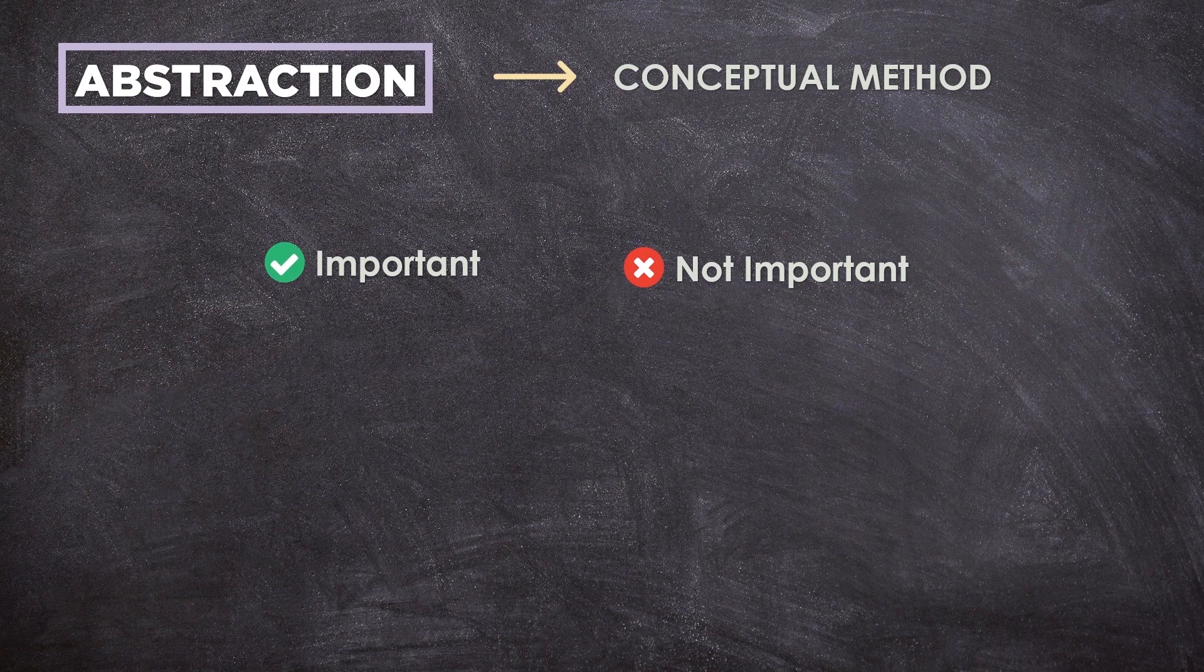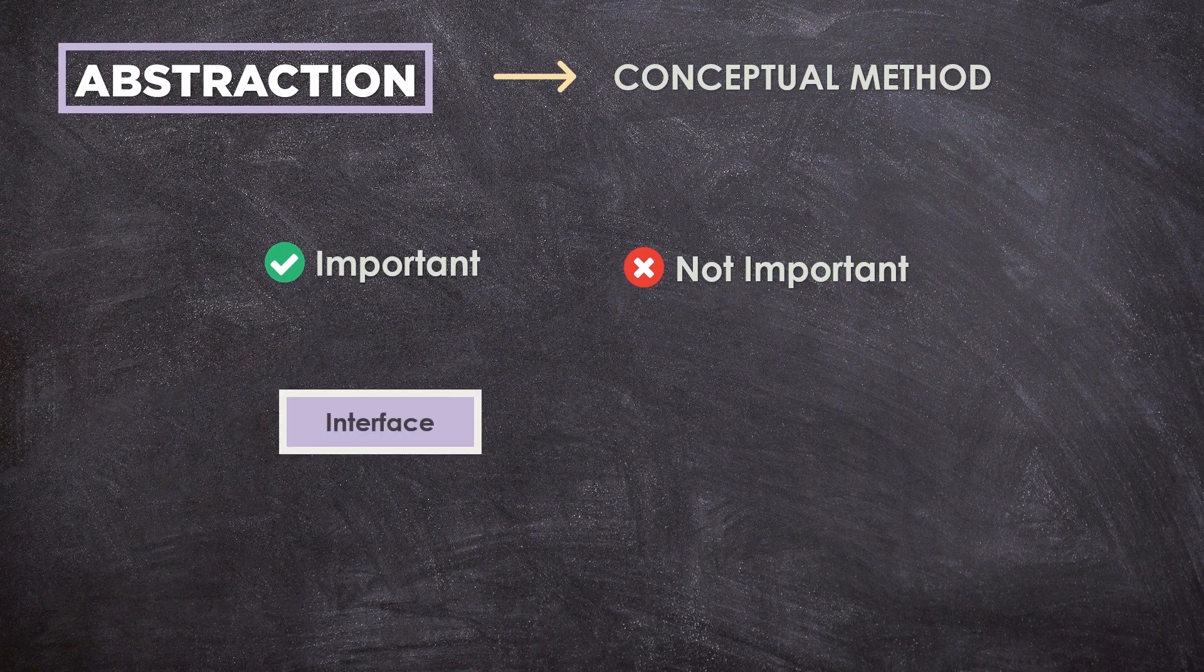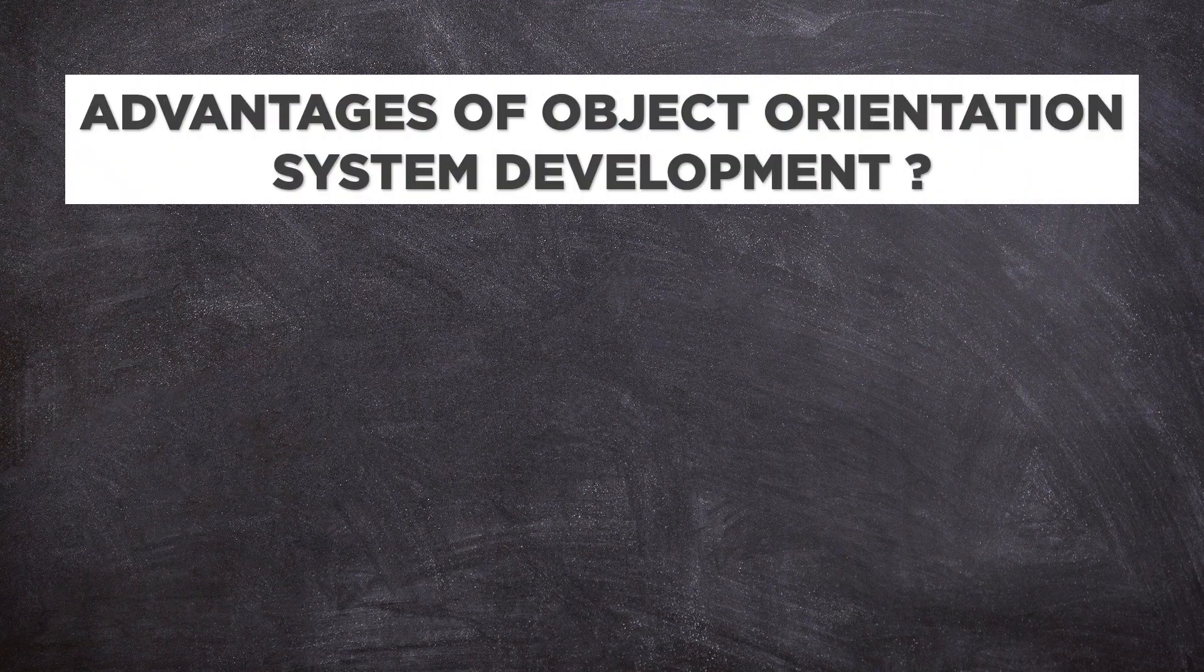Abstraction allows the programmer to focus on few concepts at a time. Java provides interfaces and abstract classes for describing abstract types.